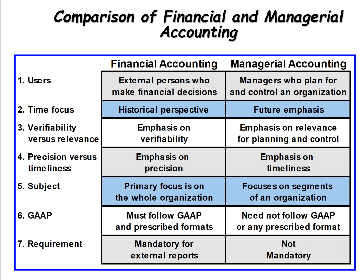This slide details the differences between financial and managerial accounting. Financial accounting is for external decision makers — people outside the organization: investors and creditors, the SEC, the government, the IRS, unions — anyone who may want to look at a company's financial position from outside. Managerial accounting, as we discussed, is for people inside the organization, like managers, for planning and control of the organization.